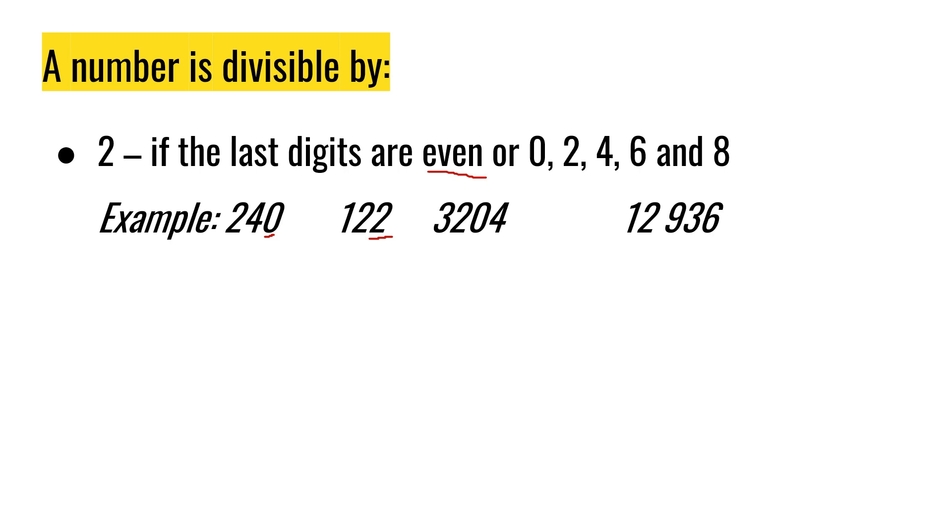3,204, last digit is 4, so it is divisible by 2. 12,936, last digit is 6, meaning it is divisible by 2. So pag dinivide natin itong mga numbers sa 2, ang magiging sagot ay walang remainder.